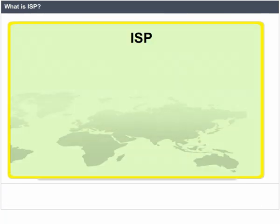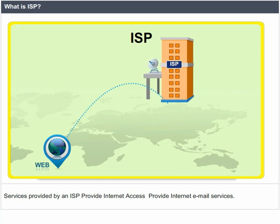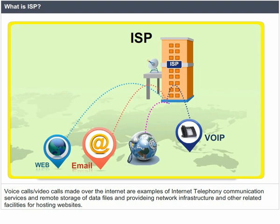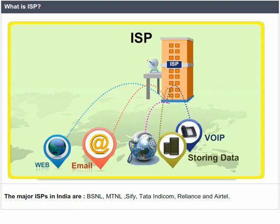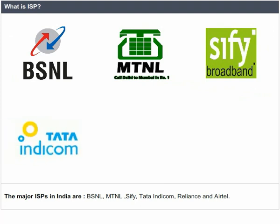What is ISP? An Internet Service Provider (ISP) or Internet Access Provider (IAP) primarily offers its customers access to the Internet. Services provided by an ISP include: providing internet access, providing internet email services, allowing users to communicate through internet telephony services (voice calls and video calls made over the internet), remote storage of data files, and providing network infrastructure and hosting facilities for websites. The major ISPs in India are BSNL, MTNL, SIFI, Tata Indicom, Reliance, and Airtel.